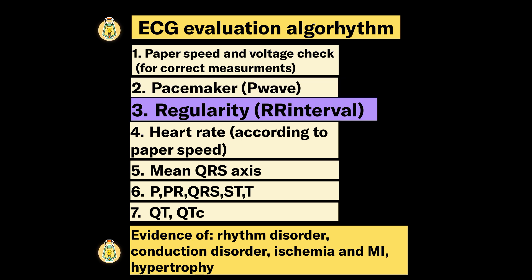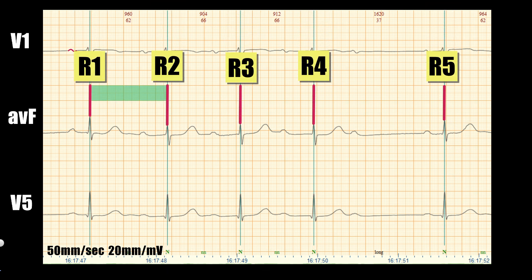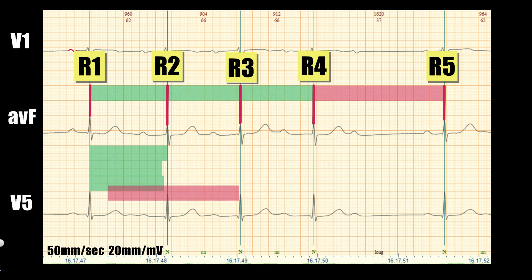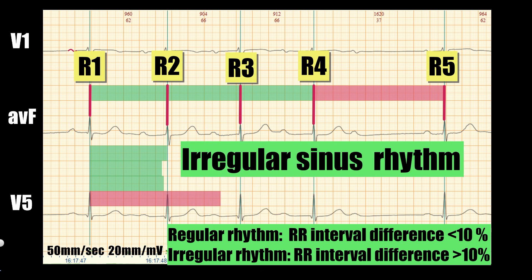The next step is regularity, which means checking RR intervals. The RR interval is defined as the distance between R wave peaks. The last RR interval is much bigger than the others. Rhythm is regular if the difference in RR intervals is less than 10%, but here we have an RR difference of more than 10%, so the sinus rhythm is irregular.